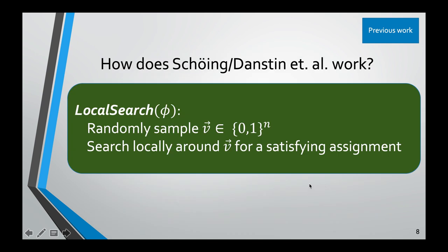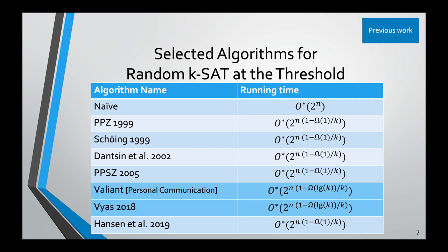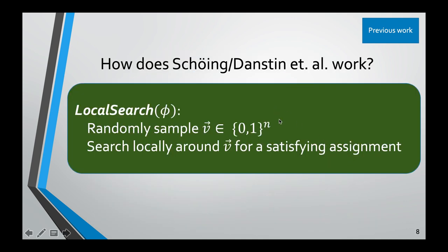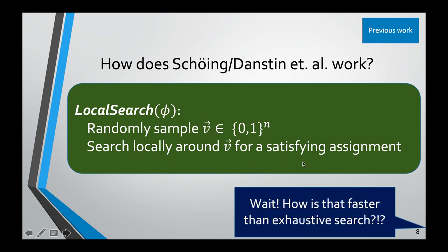Before explaining our algorithm, we'll explain the algorithm of Schöning and Dantsin, which are worst-case algorithms that provide a template for what we use. Our algorithm is basically a small modification of theirs that yields a small runtime improvement in the random case. The Schöning-Dantsin algorithm is very simple: you randomly sample a bunch of assignments and then search locally around each one for a satisfying assignment. You may wonder how this is faster than exhaustive search — it's not obvious — but there's a key optimization in local search.